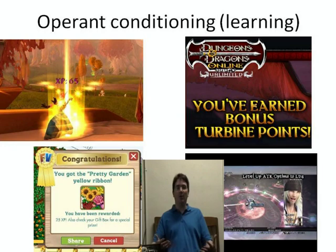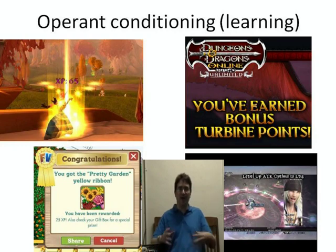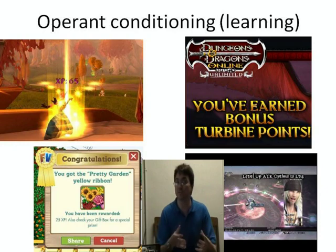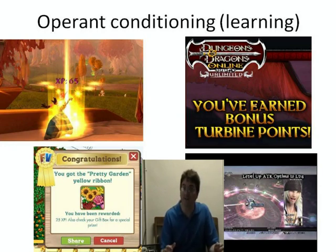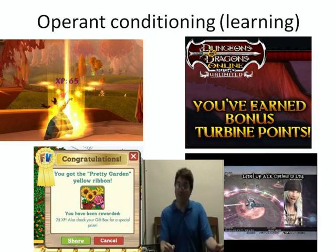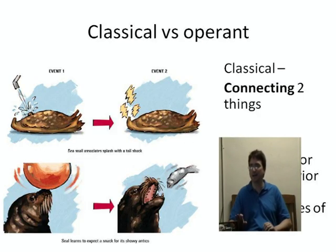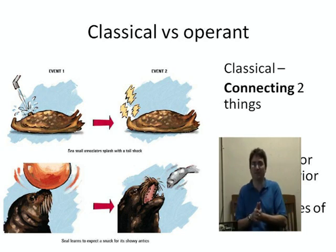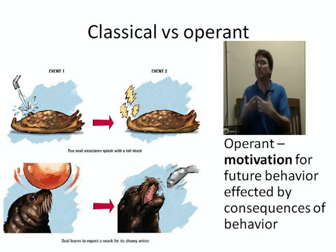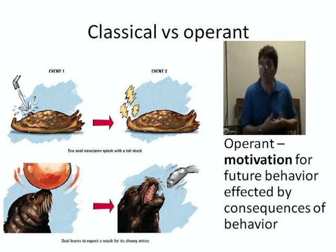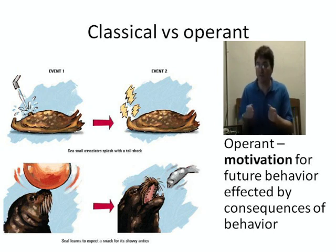Operant conditioning also appears all over the place, and one place many of you probably see it is in video games. Video games have to find a way to get their users to continue playing, and that's done by making the consequences of playing favorable — such as gaining experience, getting the newest armor in World of Warcraft, or getting a new garden ribbon in Farmville. So to answer the question: the difference between classical and operant conditioning is that classical conditioning is simply connecting two things, while operant conditioning is more of a motivation for future behavior based on the consequences of past behavior — like a sea lion that balances a ball on its nose and gets a fish as a reward, becoming more likely to balance the ball again.